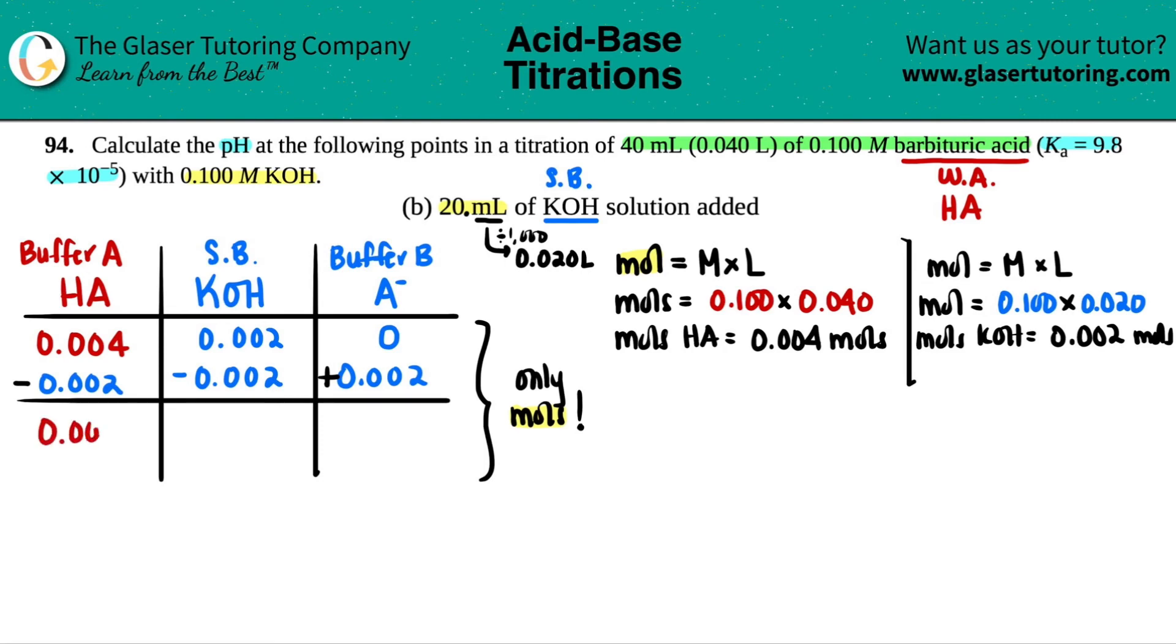So in this case, this would be subtraction. The acid is more than the base. And if we do subtract them, you will get out 0.002 left over. This, thankfully, there's no more of this because it's zero. And then over here, you do have 0.002 of this.